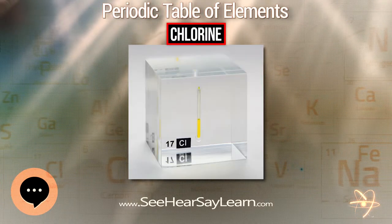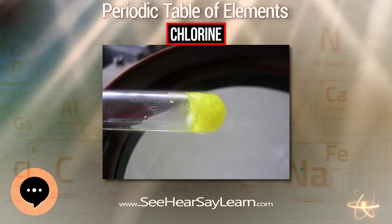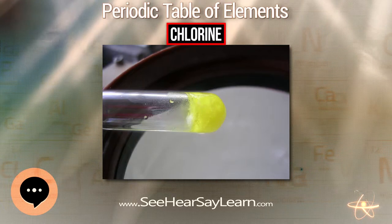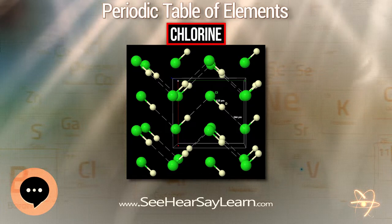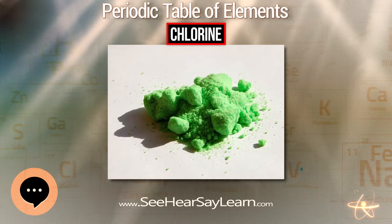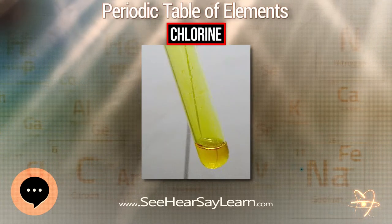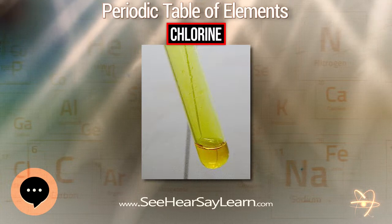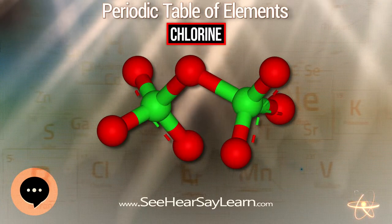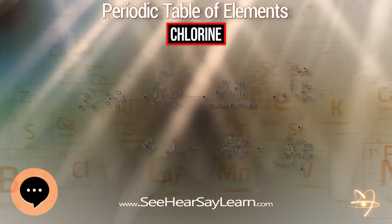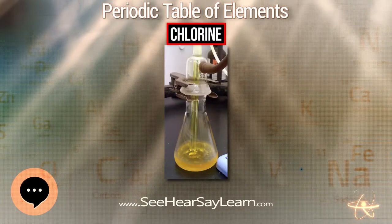The high oxidizing potential of elemental chlorine led to the development of commercial bleaches and disinfectants, and as a reagent for many processes in the chemical industry. Chlorine is used in the manufacture of a wide range of consumer products — about two-thirds of them organic chemicals such as polyvinyl chloride — and many intermediates for the production of plastics and other end products which do not contain the element.